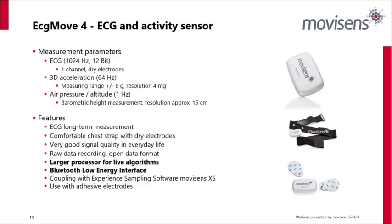Now getting to our feature product for this webinar — the ECG MU-4, our ECG and activity sensor. It has excellent detection at 1024 hertz — that's 1024 samples per second — so we get over millisecond accuracy with our peak detection, which, as we'll discuss with heart rate variability, is really important for an accurate measurement.